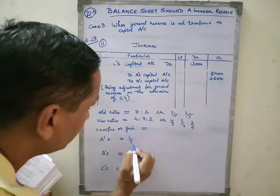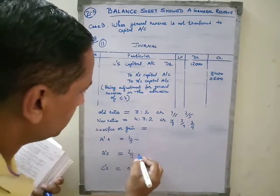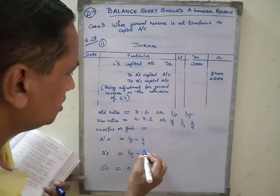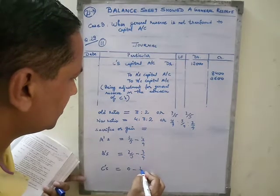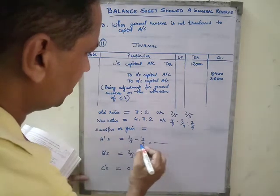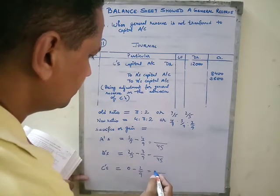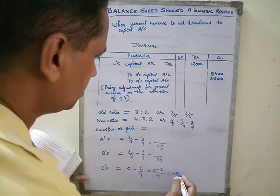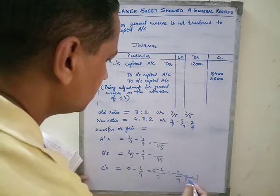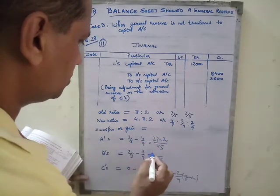The old ratio is 3/5 and 2/5. The new ratio is 4/9, 3/9, and 2/9. Computing cross-multiplications: 5×9 = 45. For C's share, 9 minus 2 gives a gain of minus 2/9 — this is a gain for C.